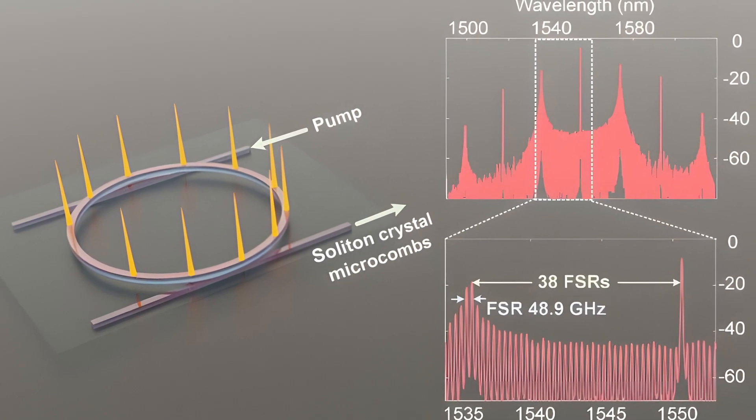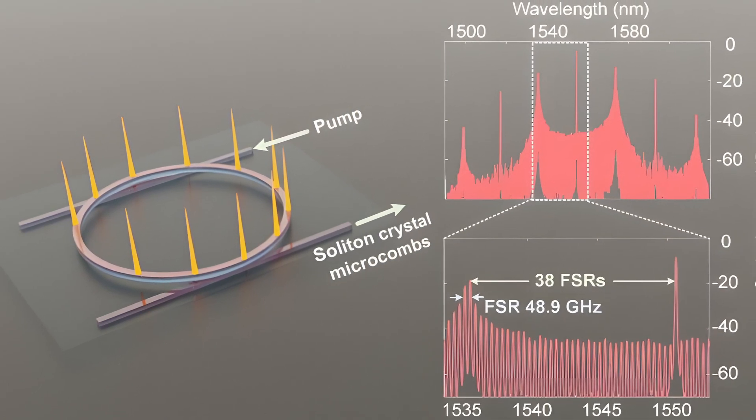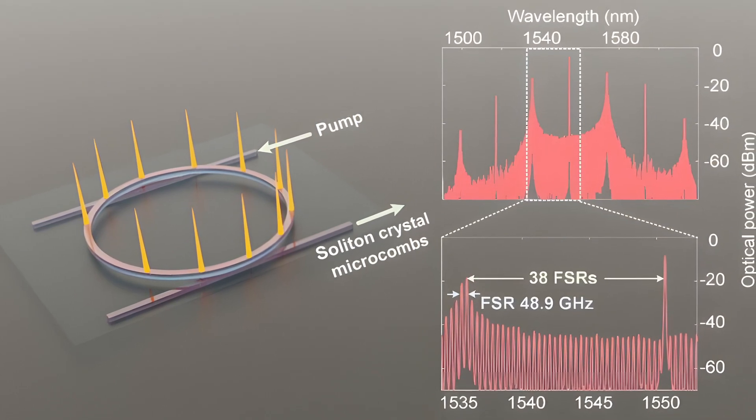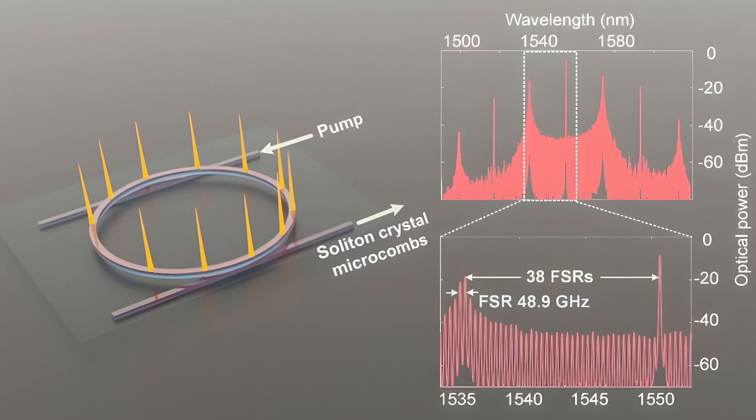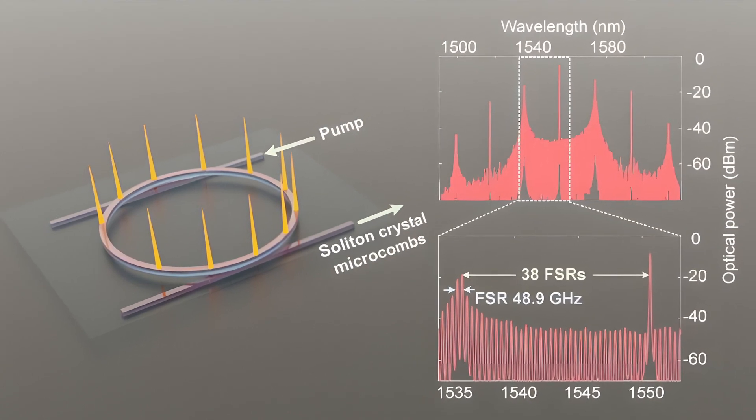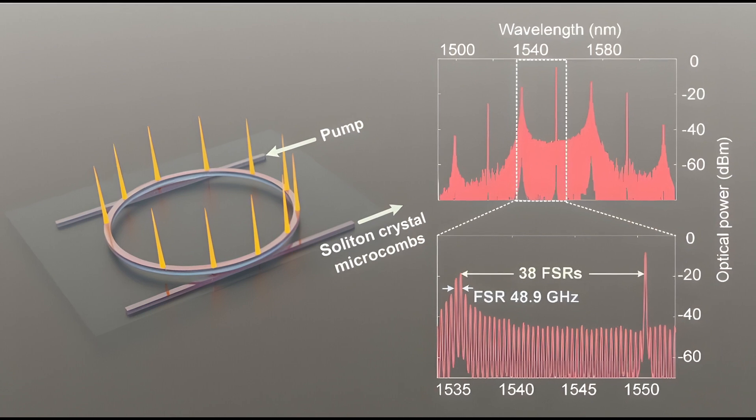Microcombs are neuromorphic devices that generate or measure extremely precise frequencies of light. According to a neuromorphic research effort at Swinburne University of Technology, neuromorphic processors using microcombs can achieve 10 trillion operations per second.